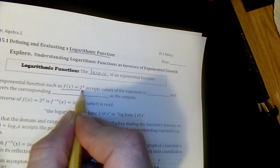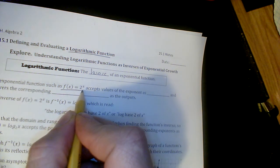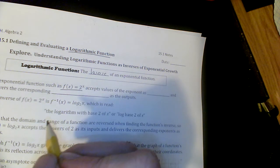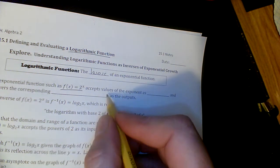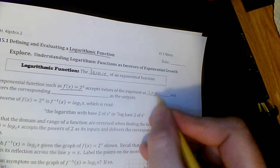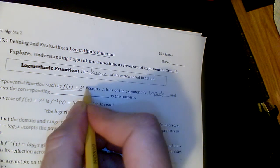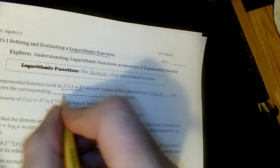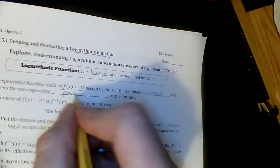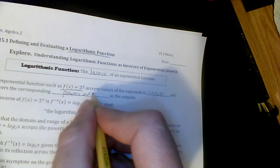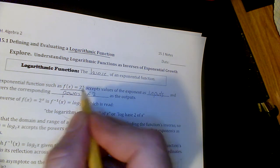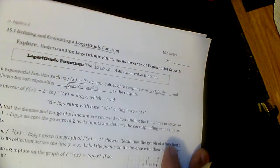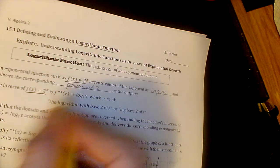Here's one of those common exponential functions we've seen, with a base of b and a power of x. When you use this, the values of the exponents are the inputs — we're plugging inputs into that exponent, and it delivers the corresponding powers of two as outputs. So inputs go in the exponents, and your outputs are the powers of two.